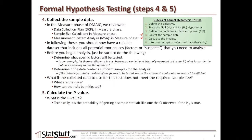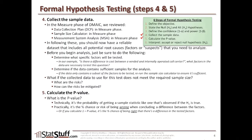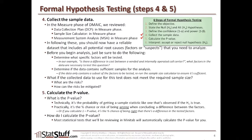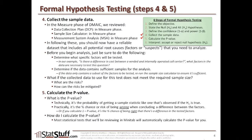The next step is calculating the p-value. Technically, it's the probability of getting a sample statistic like the one observed if the null hypothesis is true. Practically, it represents the percent chance or risk of being wrong when concluding a difference between the factors. For example, a p-value of 0.03 means there's a 3% chance of being wrong when concluding a difference exists. Alternatively, 1 minus the p-value gives the percent chance of being right that a difference exists. Most statistical tests in Minitab will automatically calculate the p-value, so we don't need to worry about computing it manually.